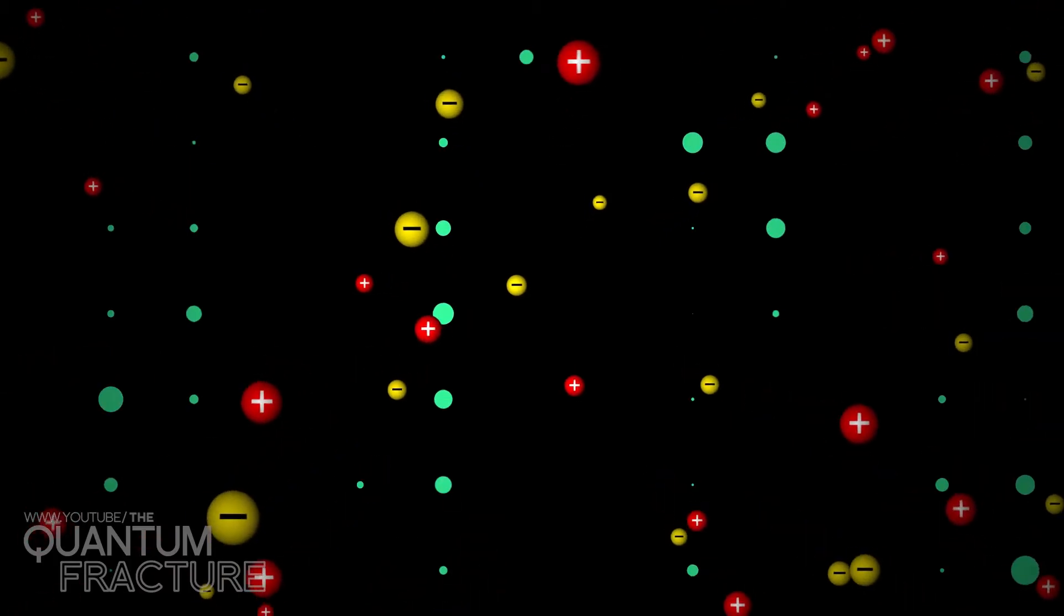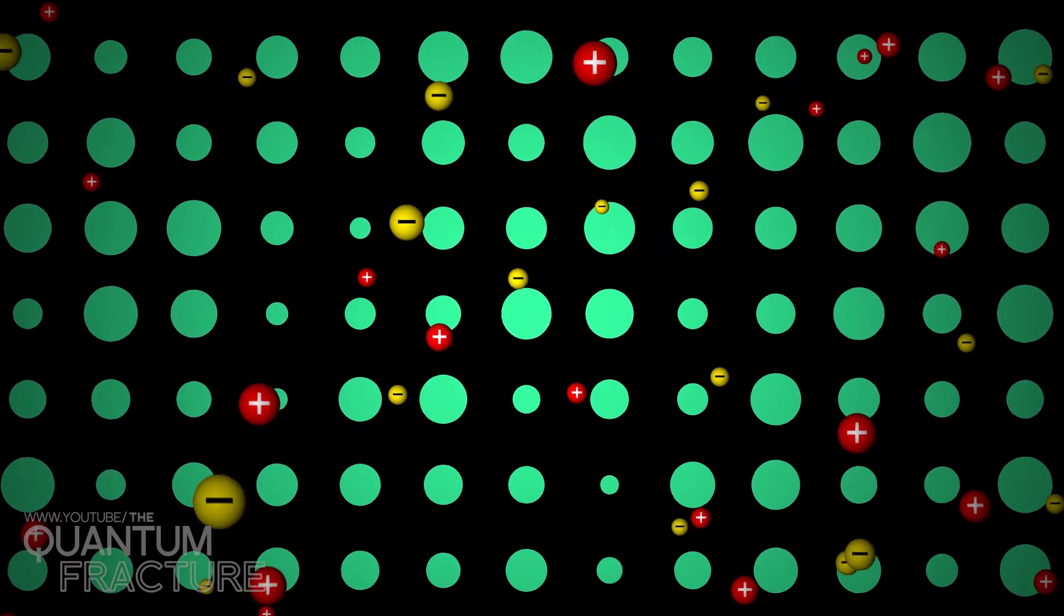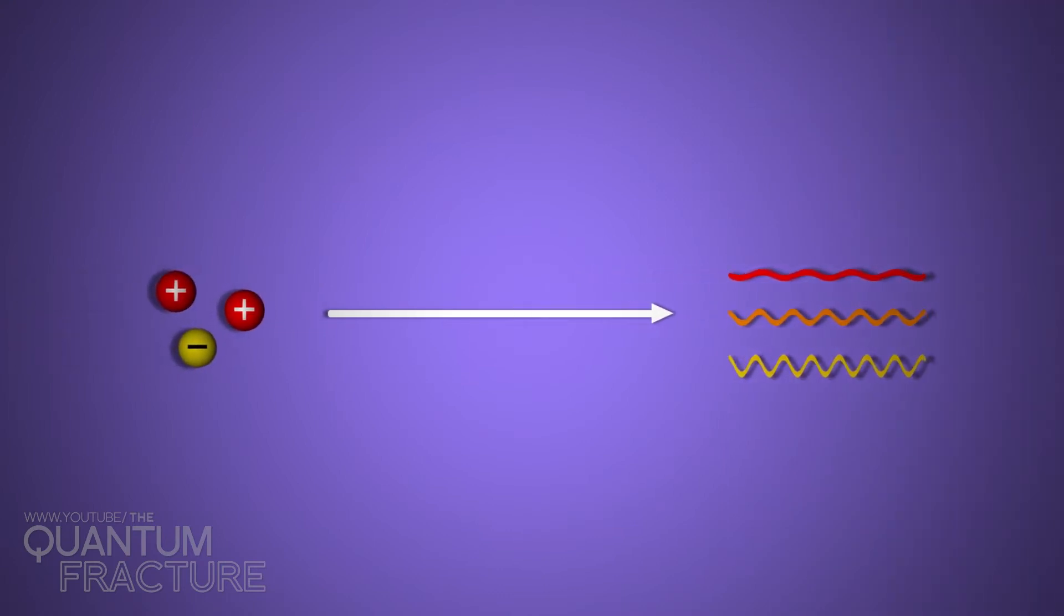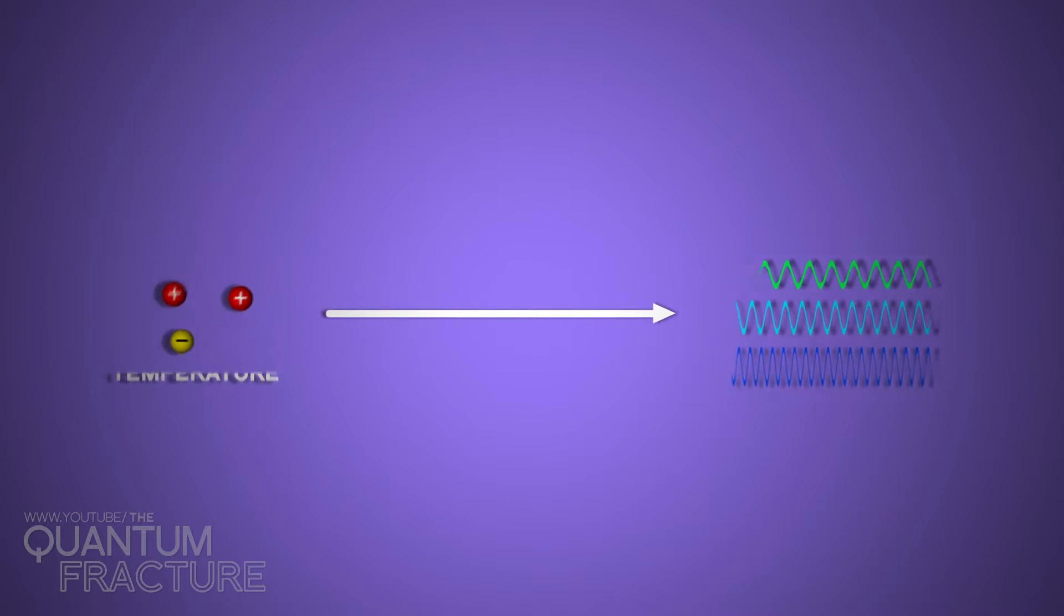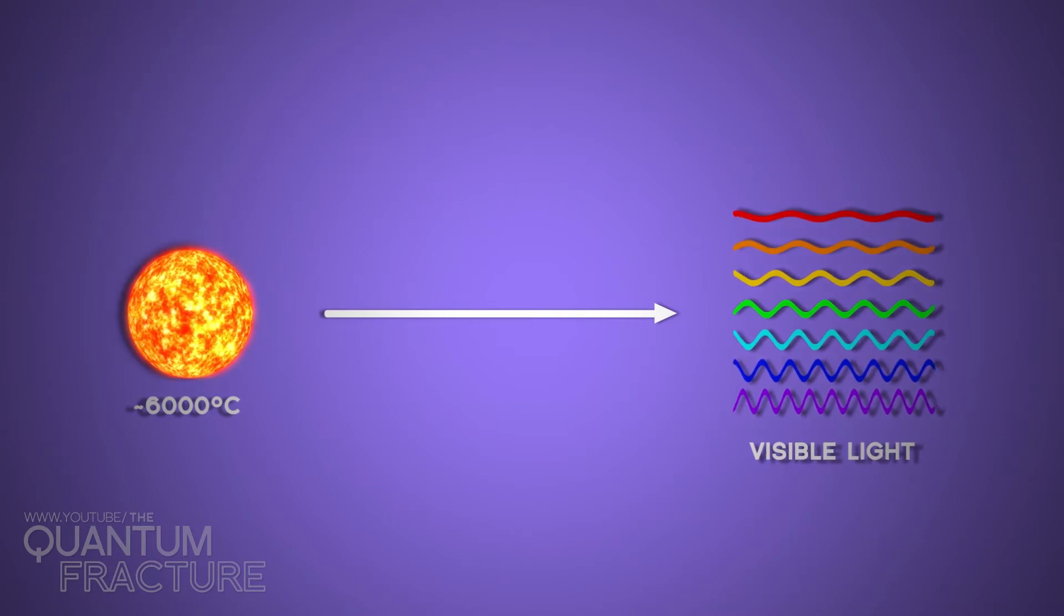We're made of charged particles which, when they move, agitate the electromagnetic field around them, creating radiation. The strength of that agitation, in other words the body's temperature, determines the type of radiation emitted. The sun at 6,000 degrees mainly emits visible light, particularly green light.